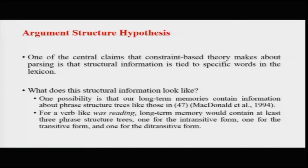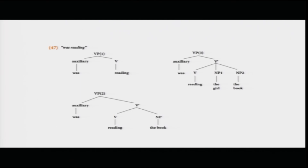So whenever we come across the verb form 'was reading,' we can draw the structure from memory and use it to speak or comprehend. For a verb like 'was reading,' long-term memory would contain at least three phrase structure trees: intransitive, transitive, and ditransitive forms. These would be: 'Dr. Phil was reading,' 'Dr. Phil was reading the book,' and 'Dr. Phil was reading the girl the book.'